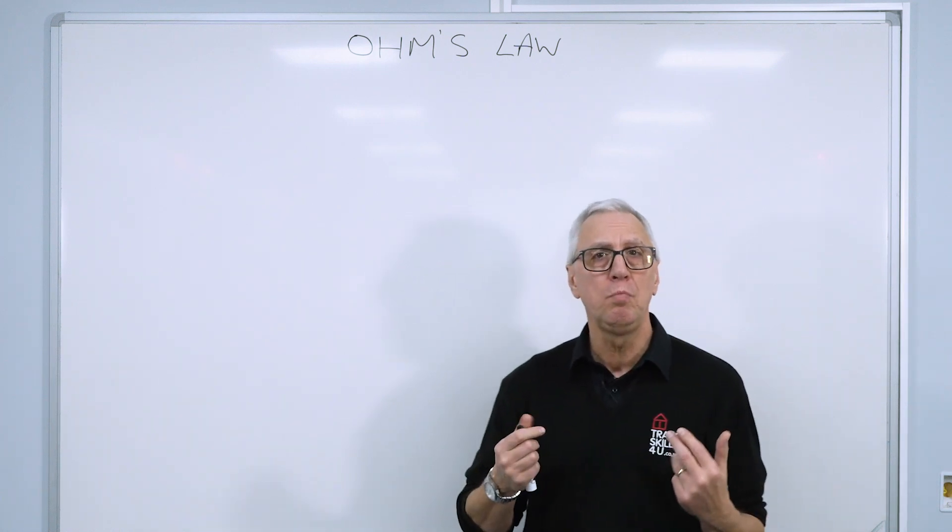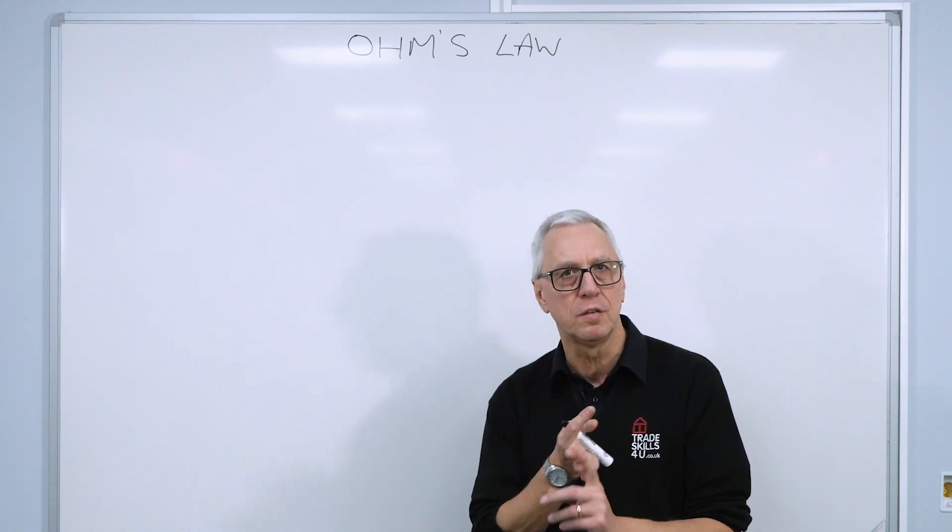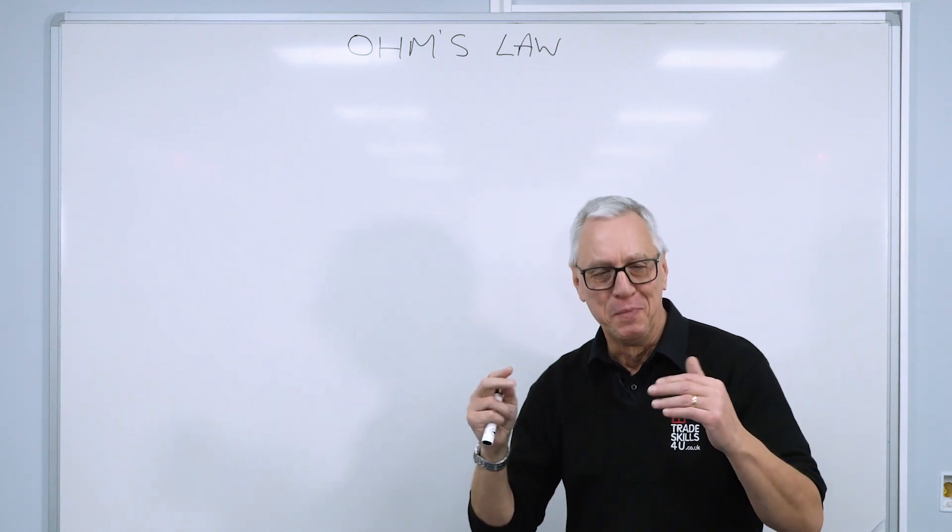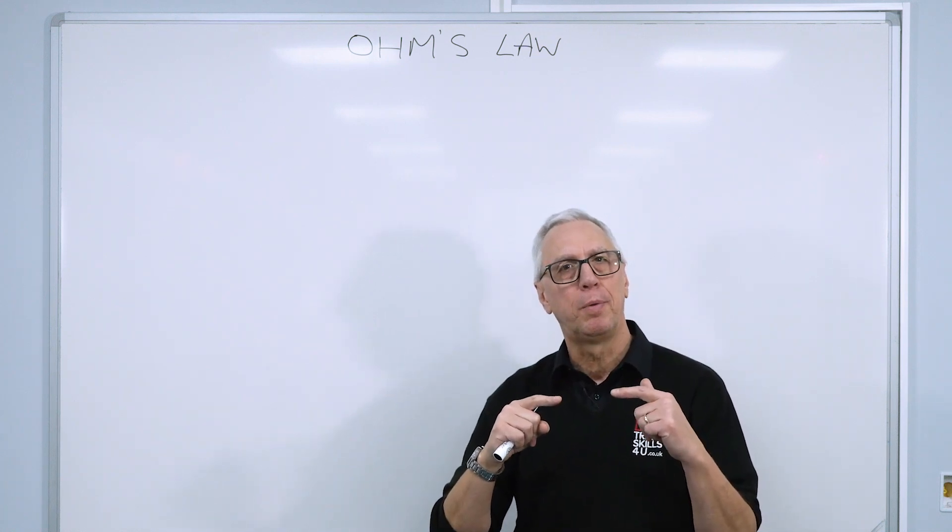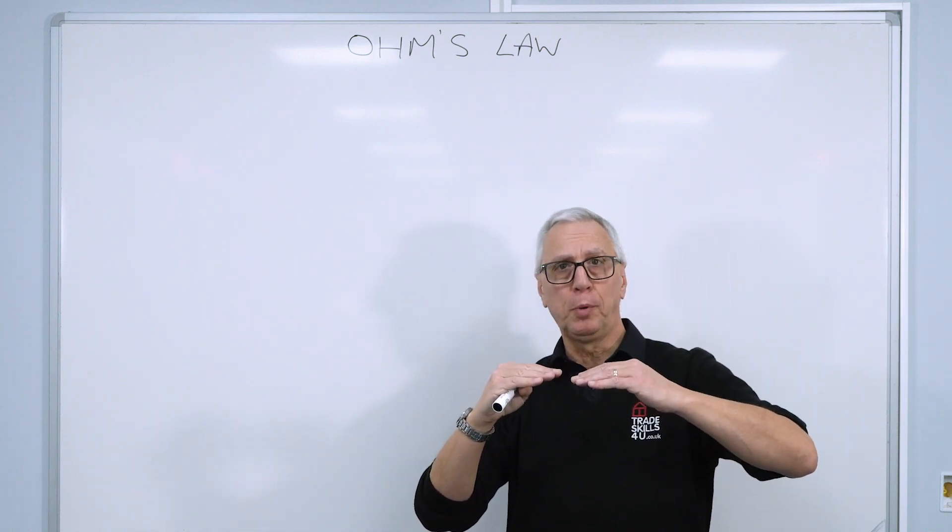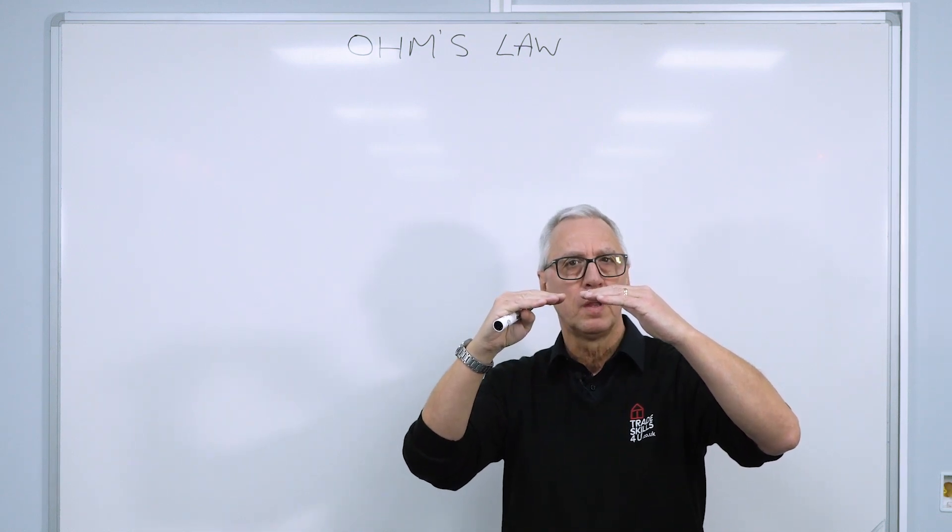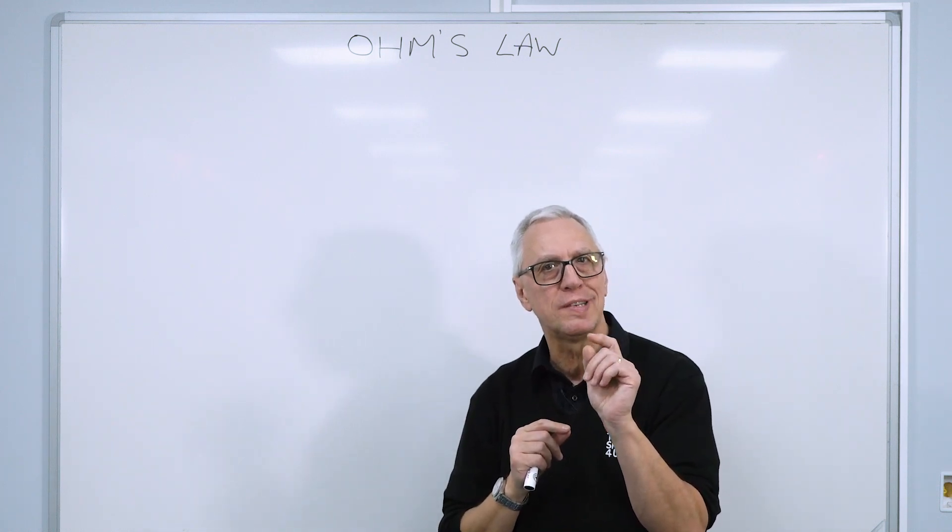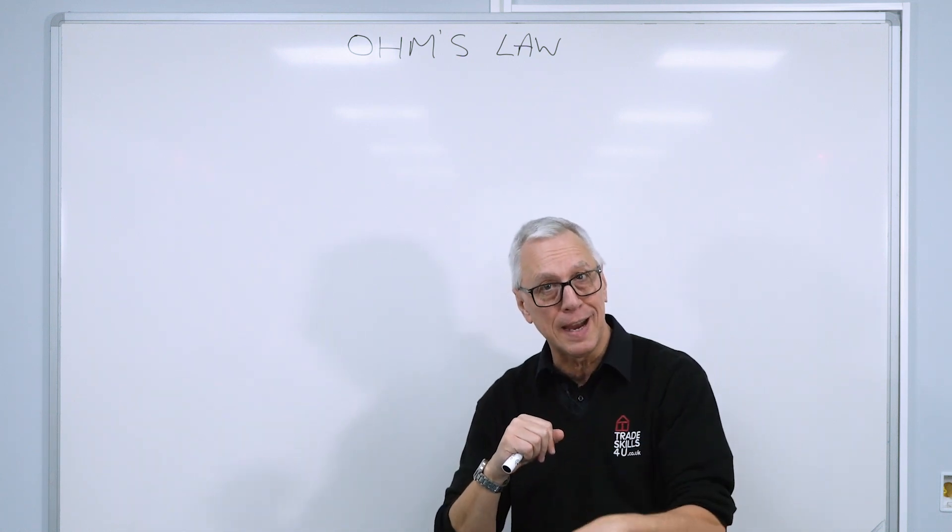What Georg Ohm did is he took these three components, voltage, current and resistance, and he worked out that, and this is Ohm's law, it's going to get technical now, that the current flow in a circuit is directly proportional to the voltage applied. So if you double the voltage in a circuit, you will double the current, but voltage and current are inversely proportional to resistance. In other words, as the voltage and the current go up, the resistance goes down.